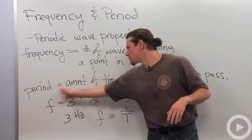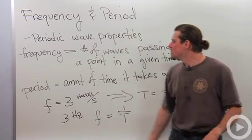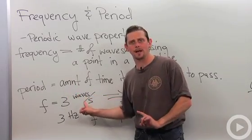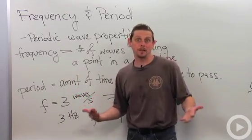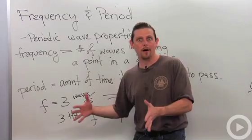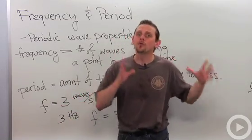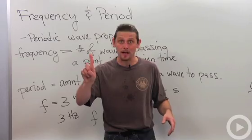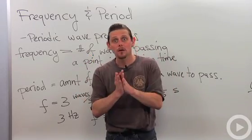Let's do an example with frequency. Suppose that the frequency is three waves per second, and that makes sense. If frequency is how many waves come in a given amount of time, then three waves per second would indicate that in one second three waves come.